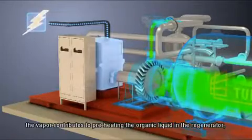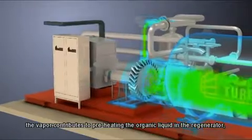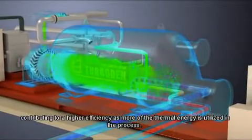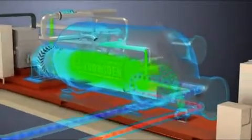Downstream of the turbine, the vapor contributes to preheating the organic liquid in the regenerator, contributing to a higher efficiency as more of the thermal energy is utilized in the process.